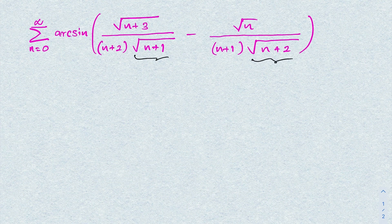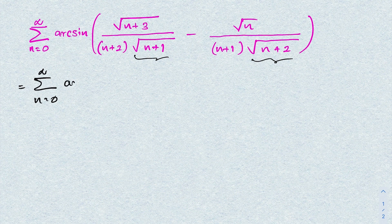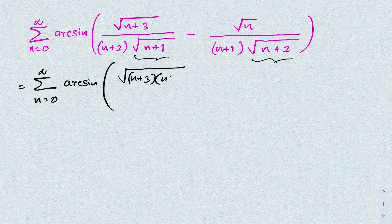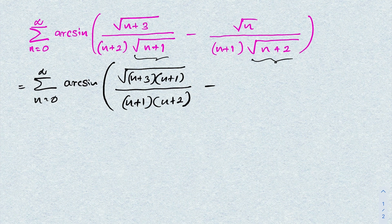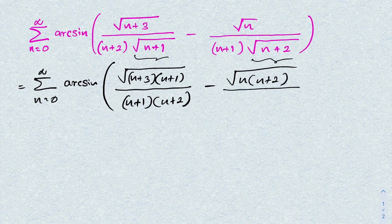As a first step, in the denominator we have square root of (n+1) and also square root of (n+2), so I'm going to remove the square root signs. I'll multiply both numerator and denominator by square root of (n+1), giving square root of (n+3)(n+1) over (n+1)(n+2). Then multiply both numerator and denominator by square root of (n+2), giving square root of n(n+2) over (n+1)(n+2).